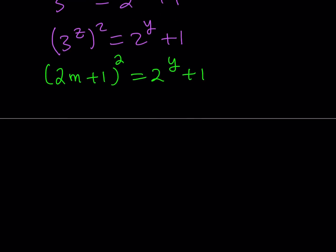Let's expand this. This gives us 4m squared plus 4m plus 1 equals 2 to the power y plus 1. Cancel out the 1 and factor the left-hand side. We get 4m multiplied by m plus 1 equals 2 to the power y.